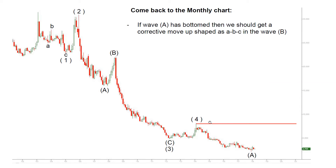Normally we have a very standard pattern for wave B up of wave five: it tends to stretch very close to the top of the preceding peak in parenthesis wave four. Not all the time, but we should at least get a 50% retrace of that move down.